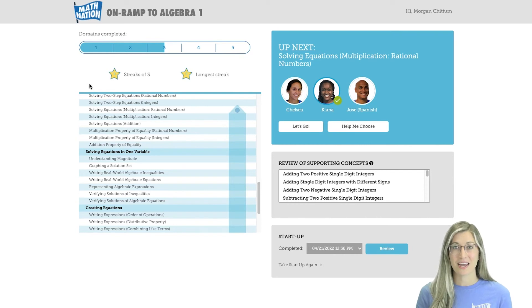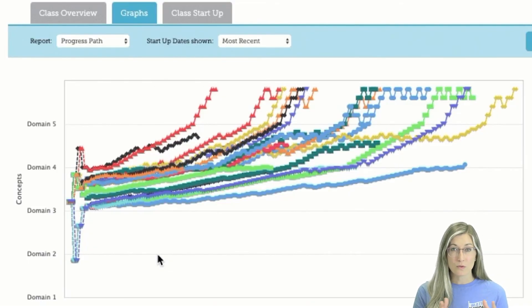Students are encouraged along the way through track streaks and a certificate of completion at the end. And while this tool is able to be used completely independently by students, teachers also have the ability to manually move students along their learning pathway if needed.